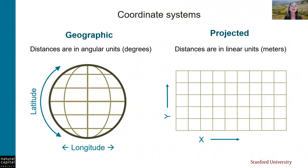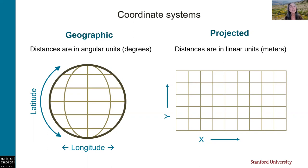A coordinate system defines how the locations on a two-dimensional digital map are related to actual locations on the Earth. There are two types of coordinate systems: geographic and projected. Geographic coordinate systems define distances with angular units of degrees. Projected coordinate systems define distances with linear units, usually meters. Most InVEST models require that all of your inputs have exactly the same projected coordinate system where the linear units are in meters. One exception is coastal vulnerability, which requires that your area of interest have a projected coordinate system, but the other inputs may have a geographic coordinate system. As always, it's important to read the user guide to learn about the data requirements for each model.